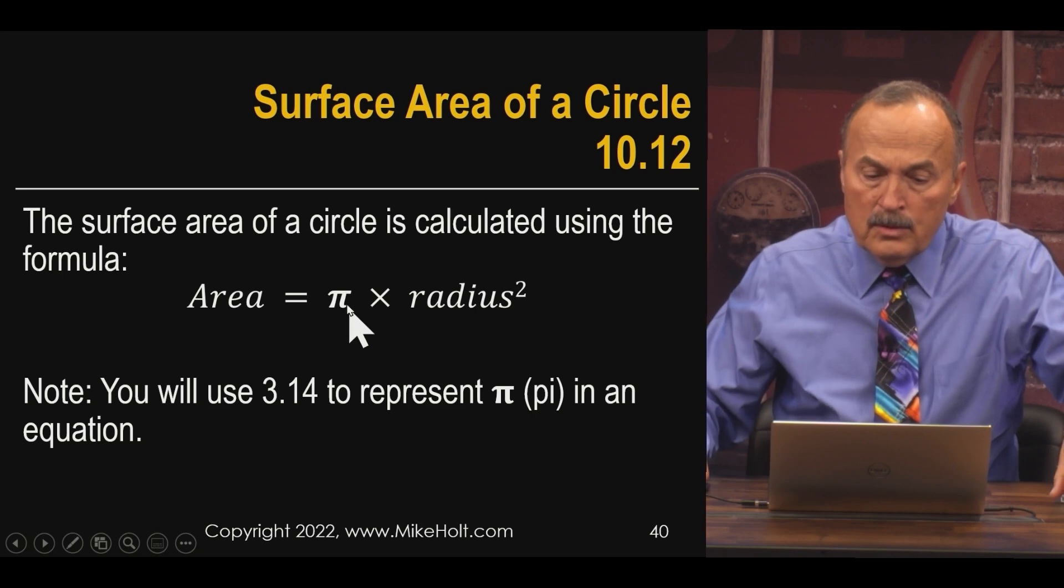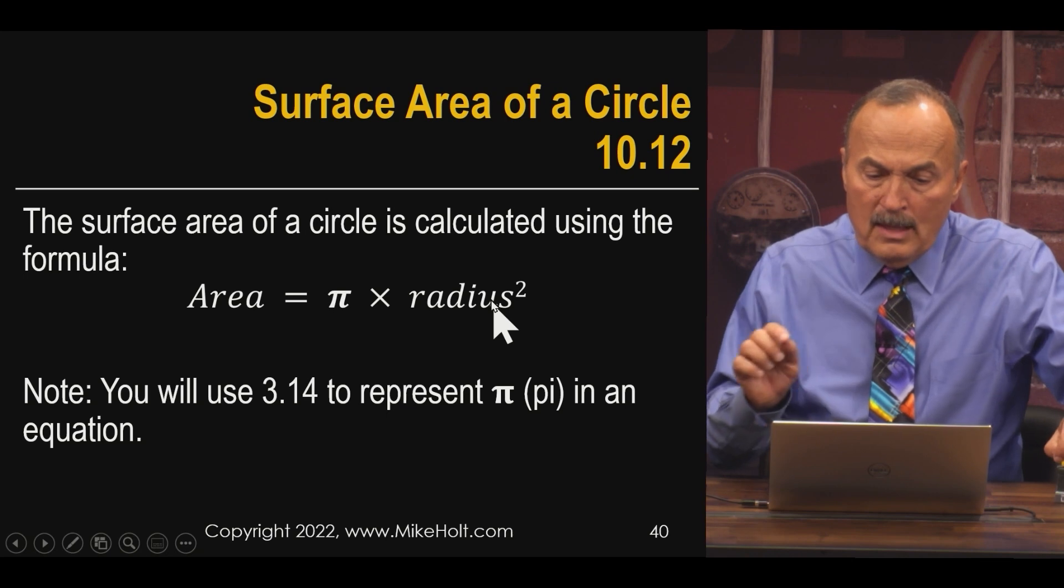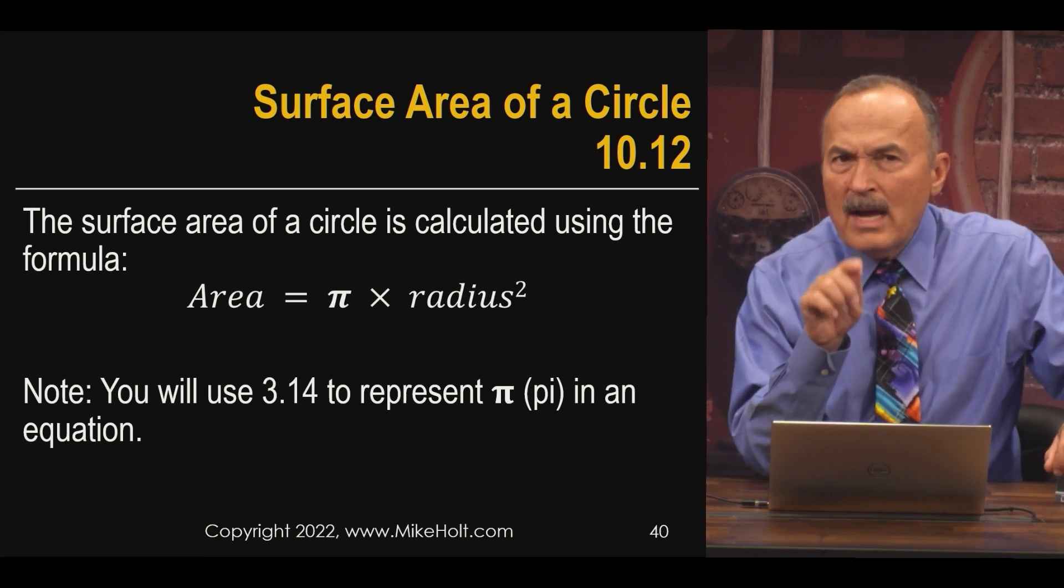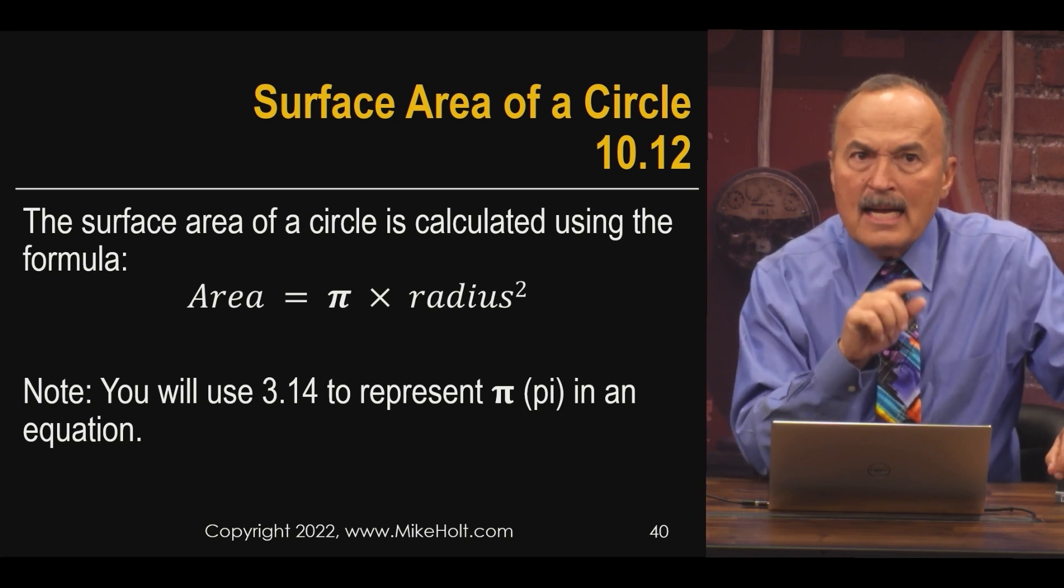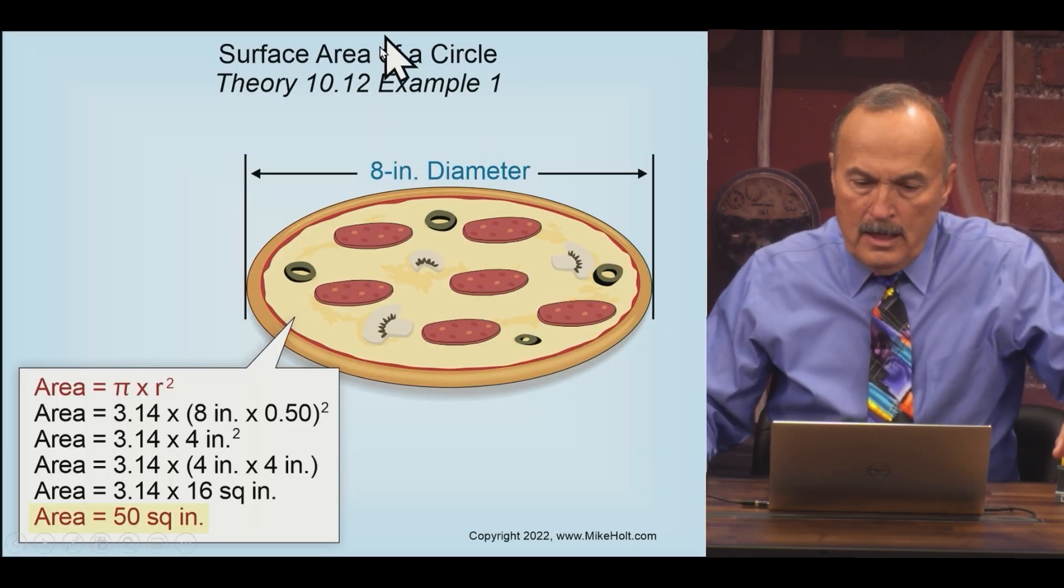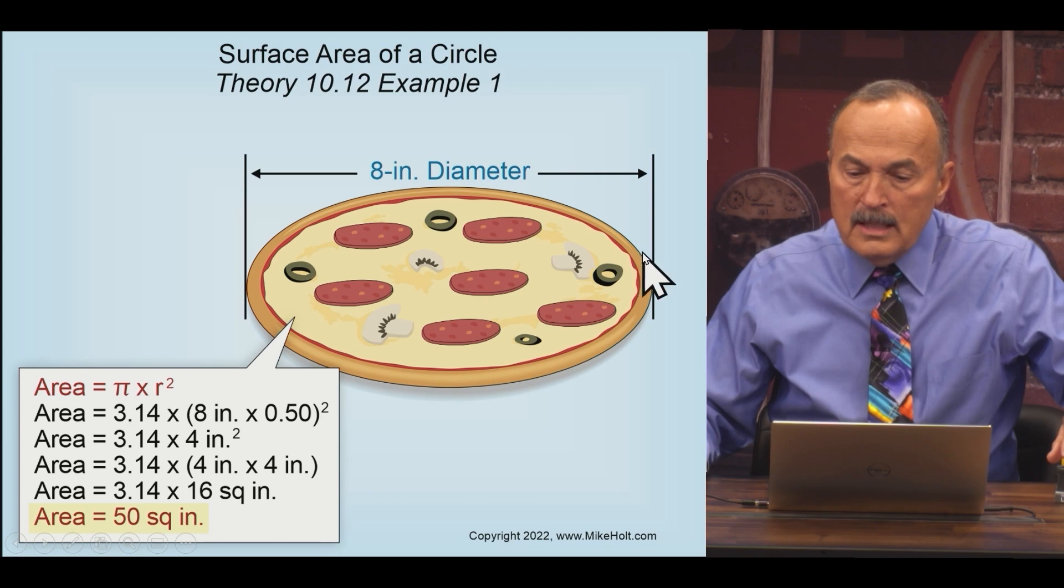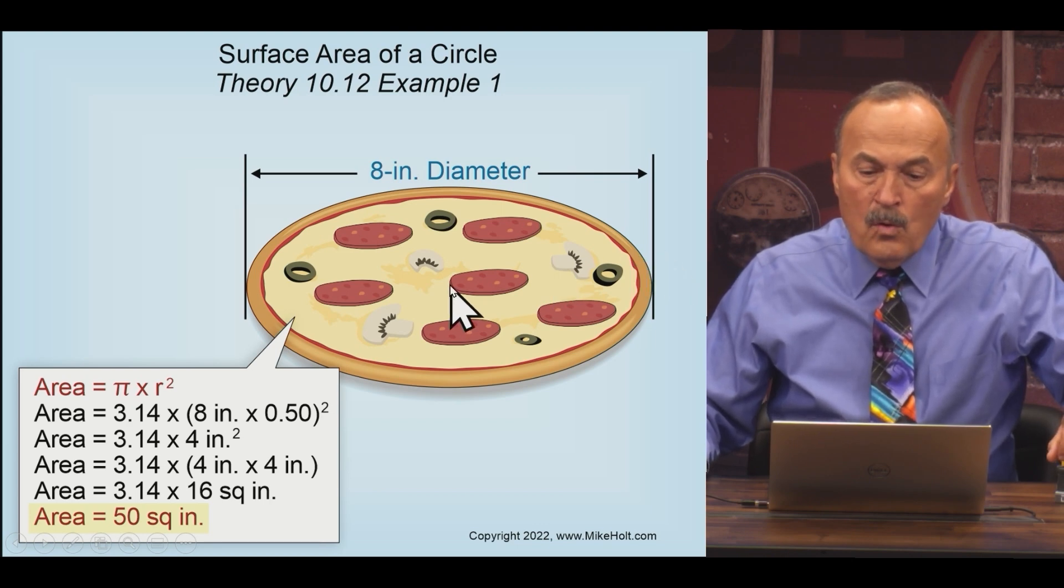The area of a circle is equal to pi - and if you look down here, the note is 3.14 - times the radius. The radius is half of a diameter. Let me get this graphic here and I can show you. Here is an eight-inch diameter. We'll add a little point from the center here across, and we'll add on the graphic four inches.